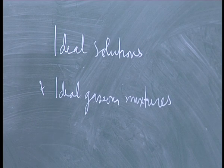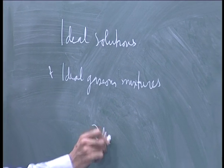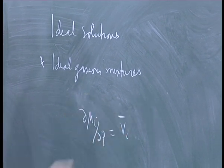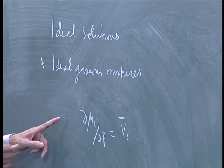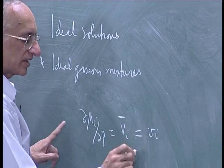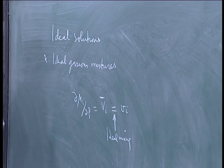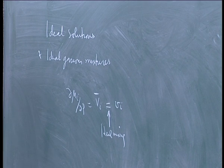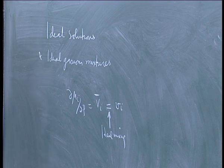In the case of ideal gaseous mixtures, there is one redeeming feature that helps you solve the Gibbs-Duhem equation using experimental data. The way this happens is: delta mu_i by delta P is equal to V_i bar — this is an exact expression. In the case of ideal mixing, molecules do not occupy volume, so there is no change in volume, and ideally molecules do not interact with one another, so there is no enthalpy change.